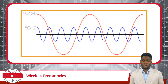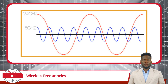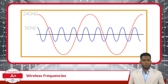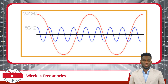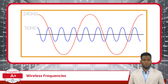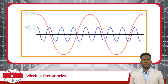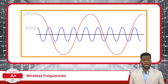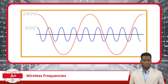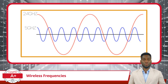Now let's meet our speedy sprinter — the 5 gigahertz band. It may not travel as far as the 2.4 gigahertz band, but it offers faster and more reliable connections over shorter distances. Due to its higher frequency, the 5 gigahertz band can handle more data, making it ideal for higher bandwidth tasks like HD video streaming, online gaming, and file transfers.